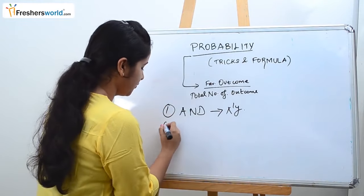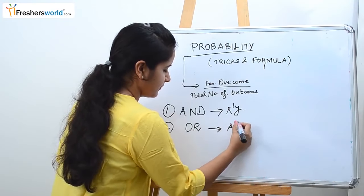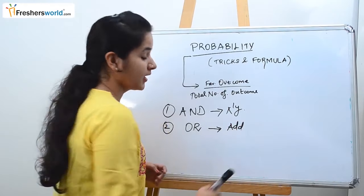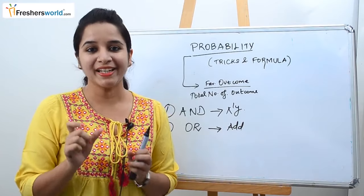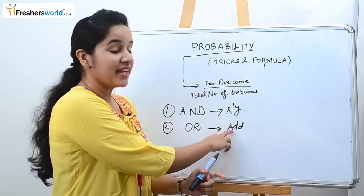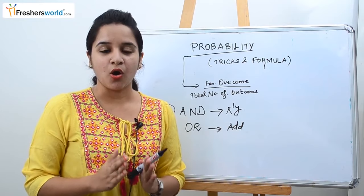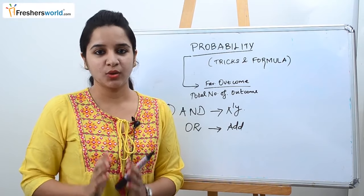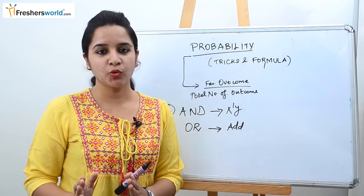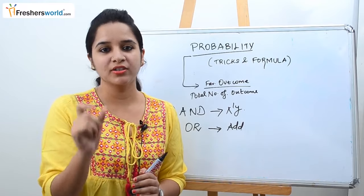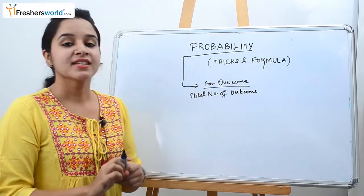Trick two: similarly, if the question has 'or' in it, then you have to add. For example, 'one king or one queen', 'one red ball or two blue balls' — if you find the word 'or' in the question, immediately you have to add it.